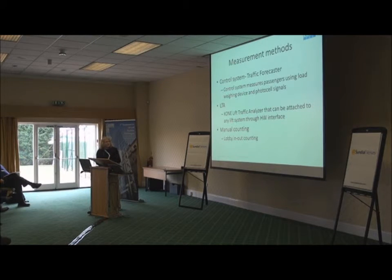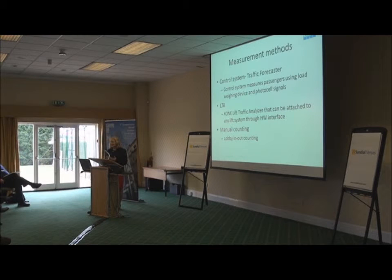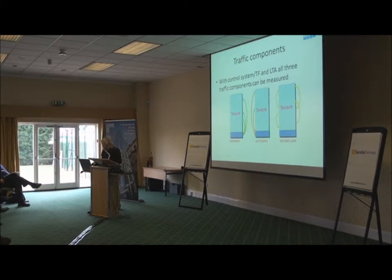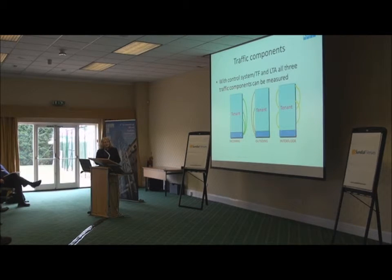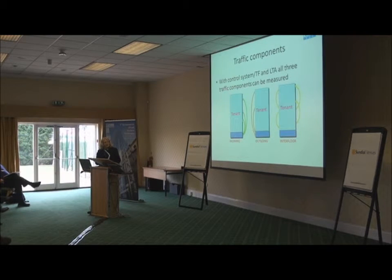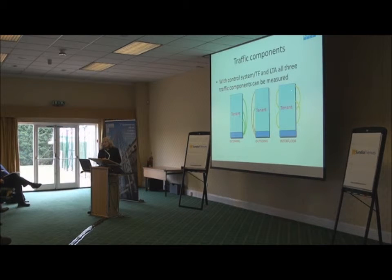The third method was manual counting — a person sits in the lobby and counts how many people came and left the building. Manual counting can only estimate the portion of incoming versus outgoing traffic and its intensity. With the LTA and control system, we can also get figures on how heavy the interfloor traffic at the upper floors is.